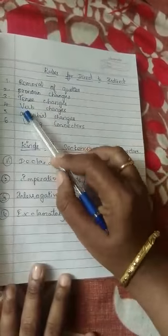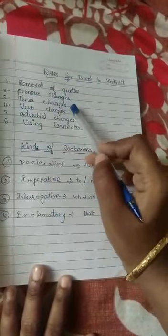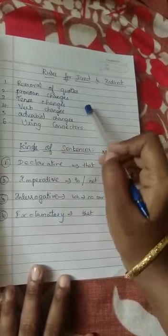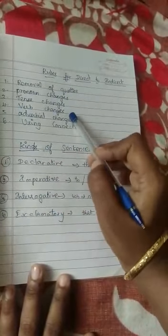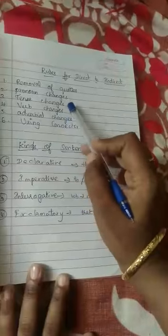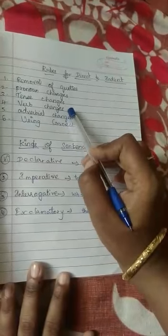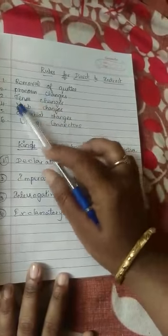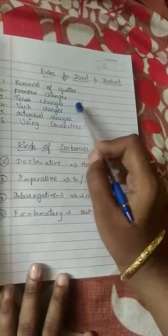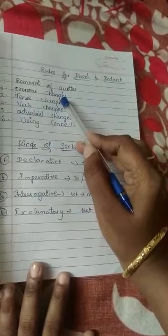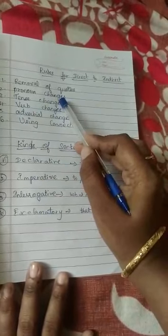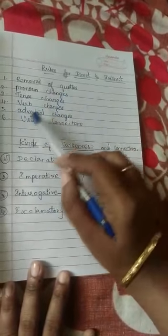Then next, verb changes. When the verb changes, after the subject we are getting a verb. Tense changes is almost the same as verb changes. When we change the present verb into past, automatically we are getting tense changes and verb changes.